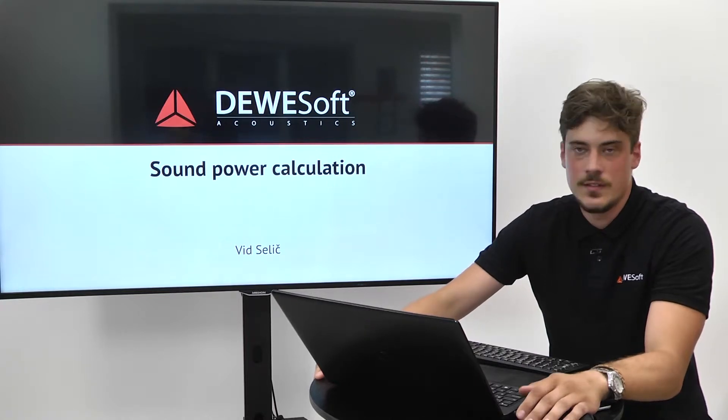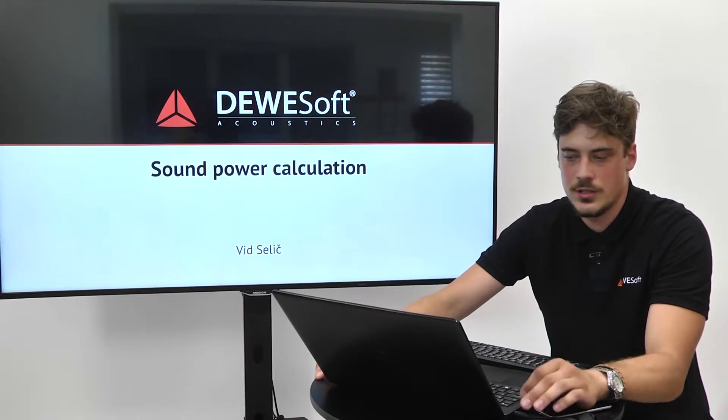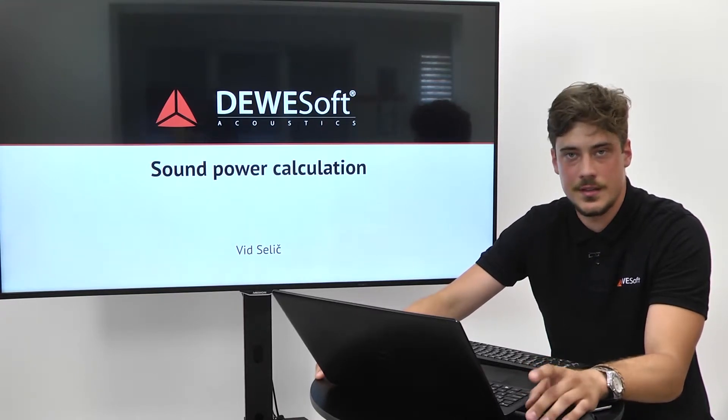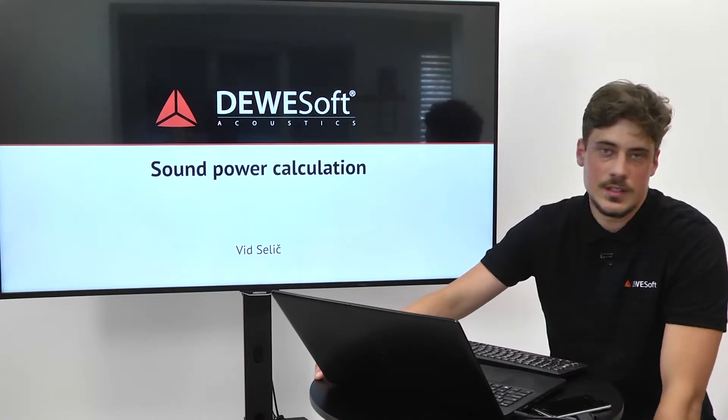We have already established how Devesoft Sound Intensity plugin can be used for noise source location. Let's now have a look at another important application – obtaining sound power through sound intensity measurement.